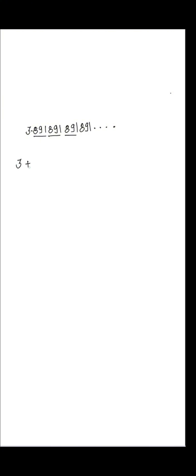Now that we understand the basics, let's move to the question. For solving this question, first figure out how many digits are repeated. So 9-1, 9-1, 9-1 are repeated. We can write this expression as 9-1, 9-1, 9-1, and so on. So I can say that the answer is 91 upon 999.